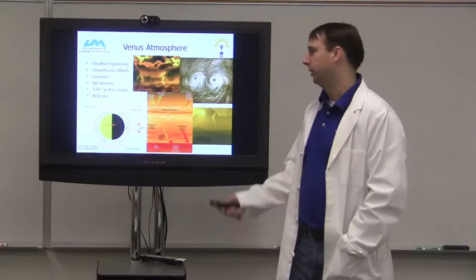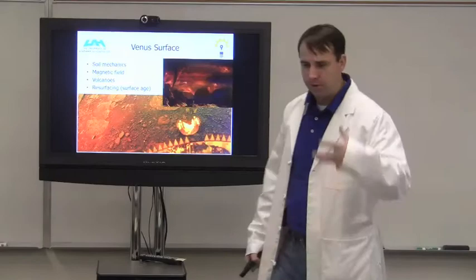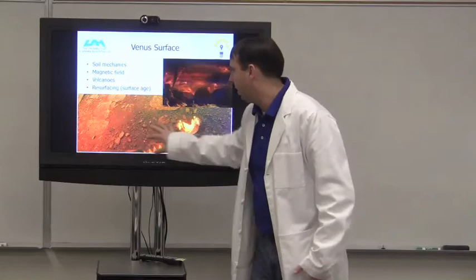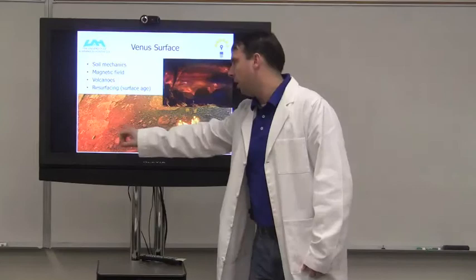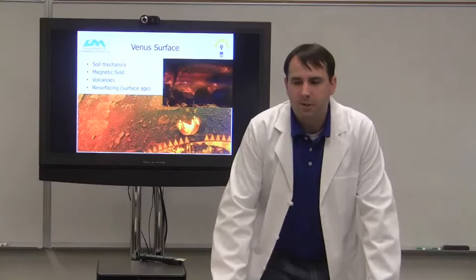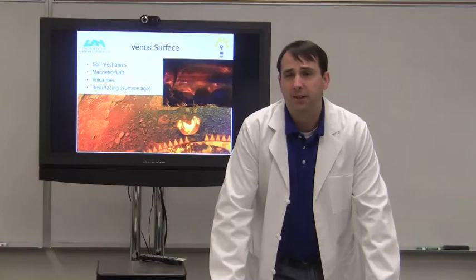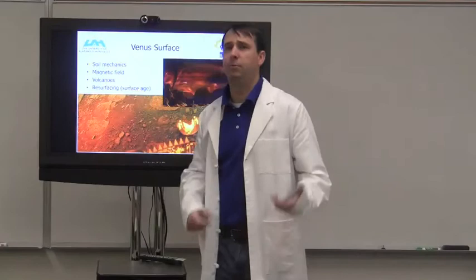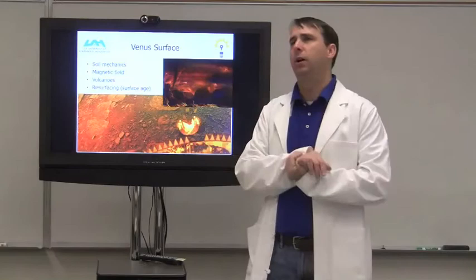The surface — you can look at soil mechanics: how hard is the surface, what is it made of, what's it like. This is an image of the surface from the Venera mission — part of the spacecraft is visible. They think the rocks look kind of broken up. You can also measure the magnetic field at the surface. Most measurements of Venus's magnetic field have occurred from altitude because it's tough to survive at the surface. Measuring the magnetic field at the surface would be interesting to see if there really is a weak magnetic field, or no magnetic field at all on Venus.